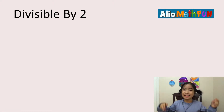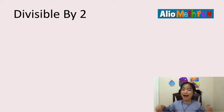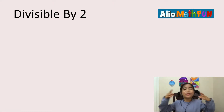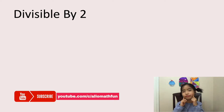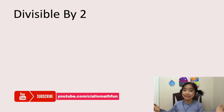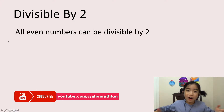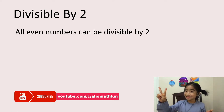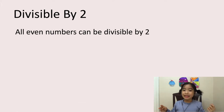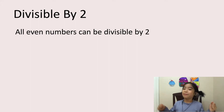First, let's look at divisible by 2. What kind of numbers are divisible by 2? Well, numbers that can be split in half are divisible by 2. All even numbers are divisible by 2, because even numbers can be grouped into pairs.